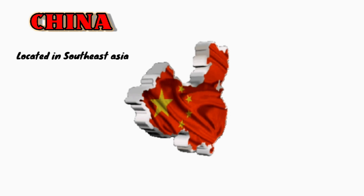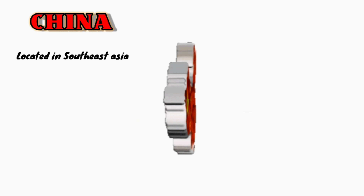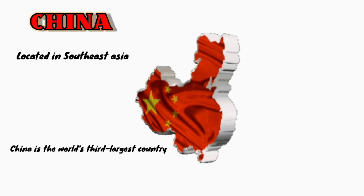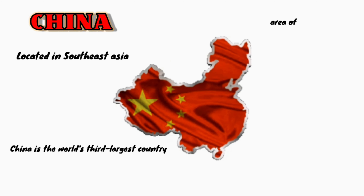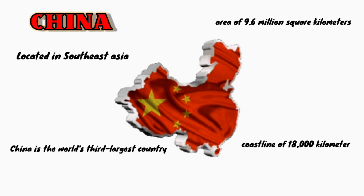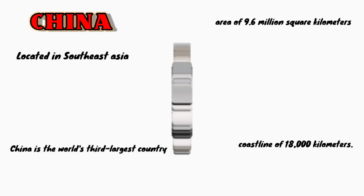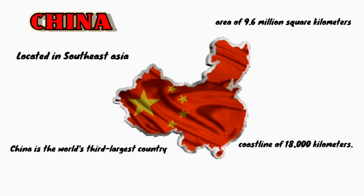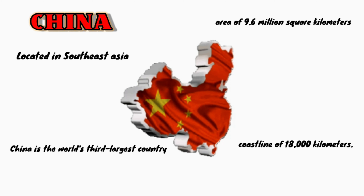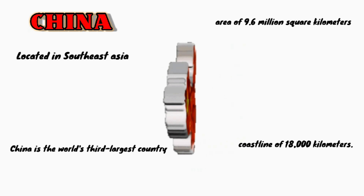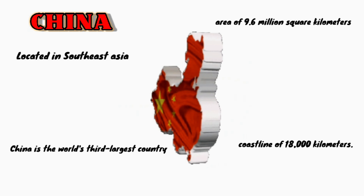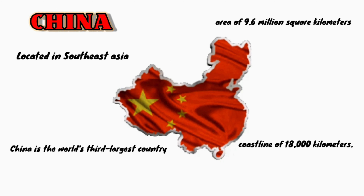Located in Southeast Asia along the coastline of the Pacific Ocean, China is the world's third largest country, with an area of 9.6 million square kilometers and a coastline of 18,000 kilometers. While China is the third largest country in the world, only about 15% of it is arable, as most of the country is made of mountains, hills, and highlands.